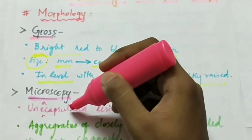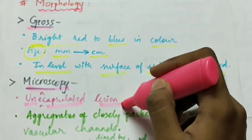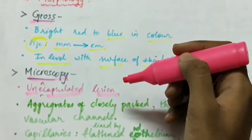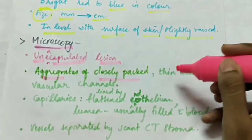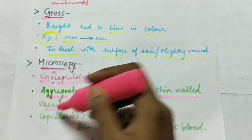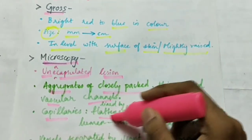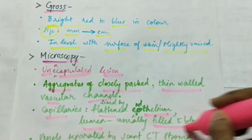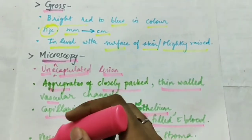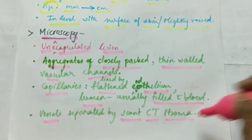Next, the microscopy. Capillary hemangioma is an unencapsulated lesion — that is, it is not surrounded by a capsule. It consists of aggregates of closely packed thin-walled vascular channels. The capillaries are lined by flattened endothelium and the lumen is usually filled with blood. The vessels are separated by scant connective tissue stroma.